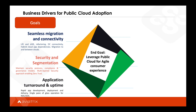Another key driver for moving to the public cloud is the agility that the cloud offers, so quick app turnaround is critical. But equally important is application uptime. For enterprises to meet their service level agreements — their SLAs — the network operation centers and the security operation centers, the NOCs and SOCs, must be enabled and empowered with single pane of glass operations.